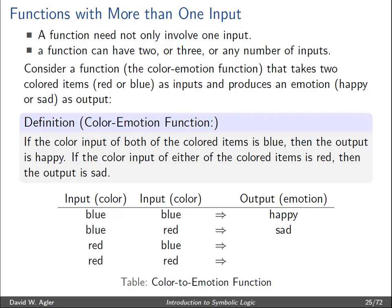Here are some examples. If both color inputs are blue, the output is happy. If one input is blue and the other is red, the output is sad. If one is red and the other is blue, the output is also sad. And if both are red — since the function says if either item is red the output is sad — the output emotion is again sad.